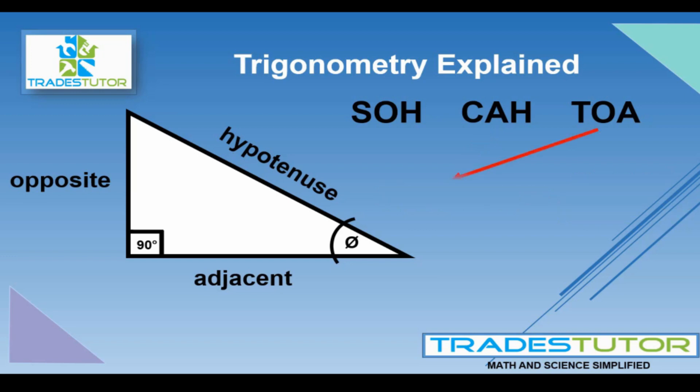And then the third one is what we call tangent. And that's a relationship between the opposite and the adjacent. Now the idea in any of these three, is if you have three variables, you know two of them, you can find the other.